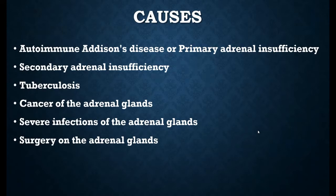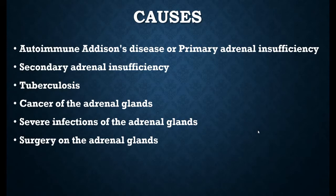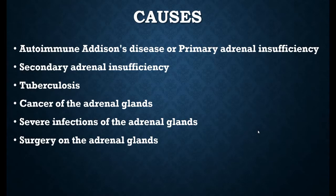The causes of Addison's disease include primary adrenal insufficiency. Seven out of ten persons suffering from this condition have their adrenal glands destroyed by their own immune cells, which is why it is called autoimmune Addison's disease. Secondary adrenal insufficiency is different — in this condition the pituitary gland is unable to produce adrenocorticotrophic hormone, known as ACTH, which means the adrenal glands are not prompted to secrete cortisol.